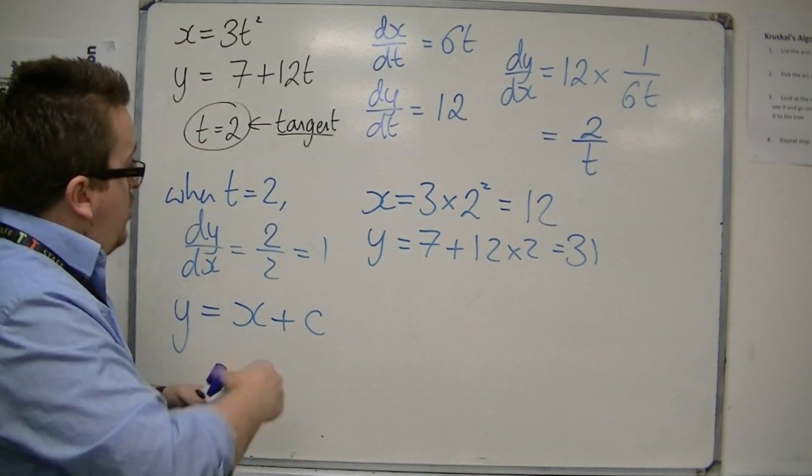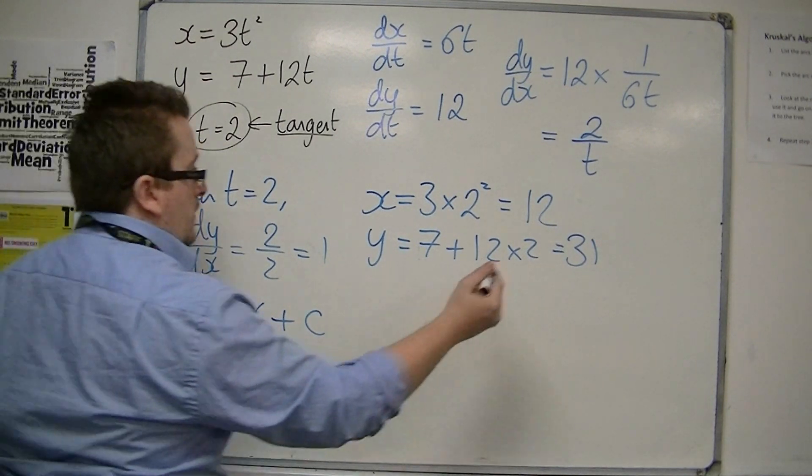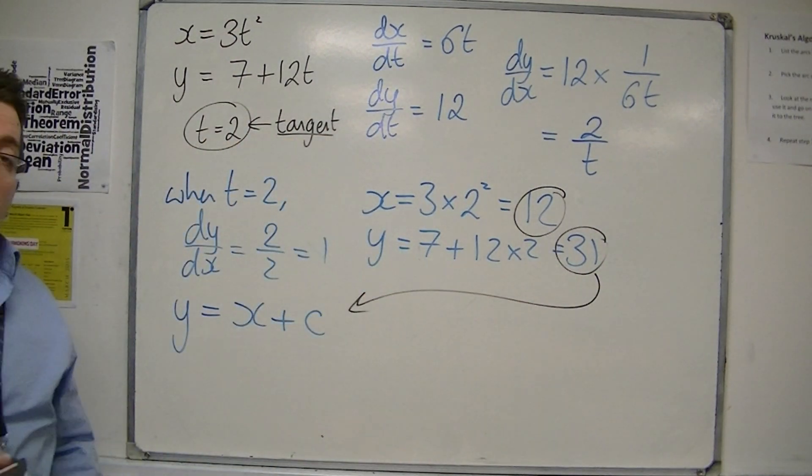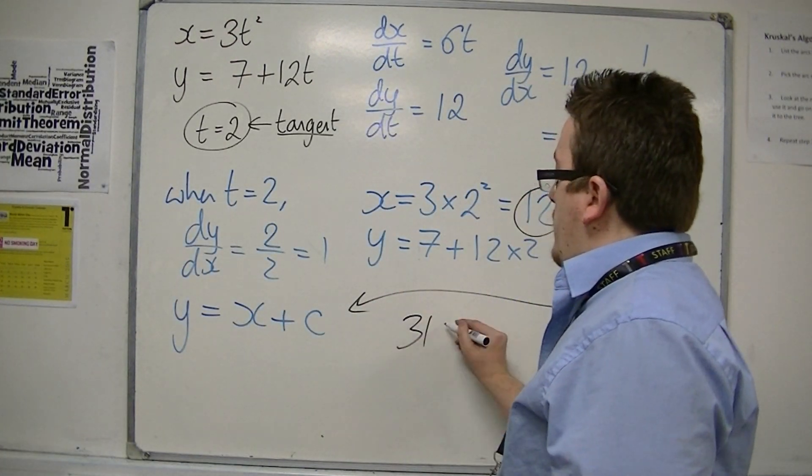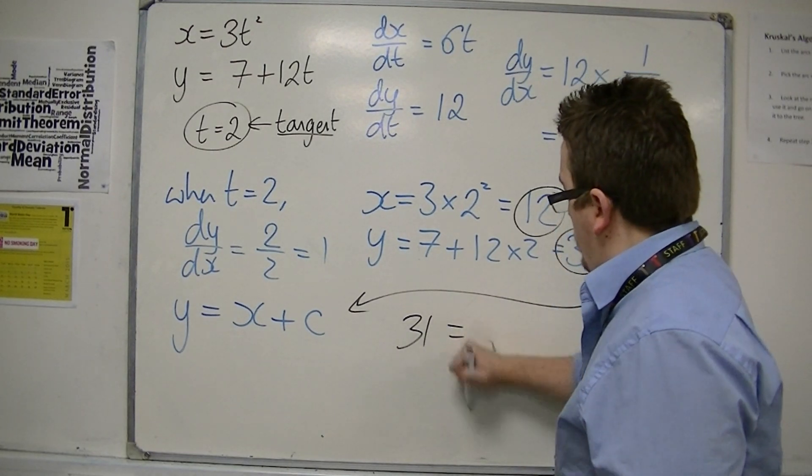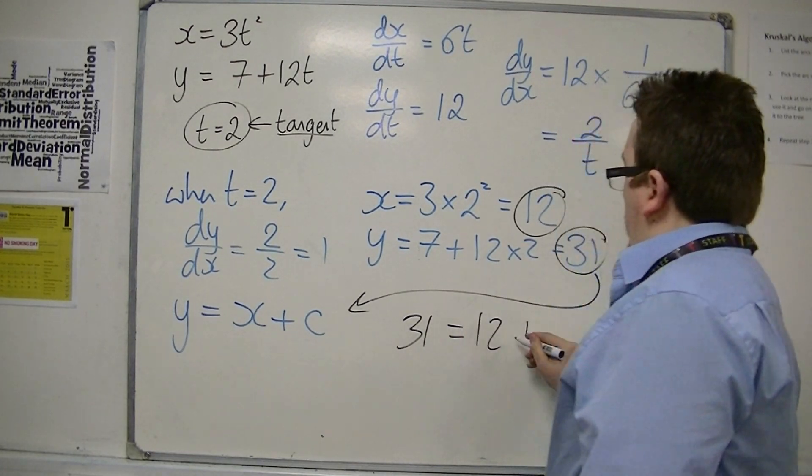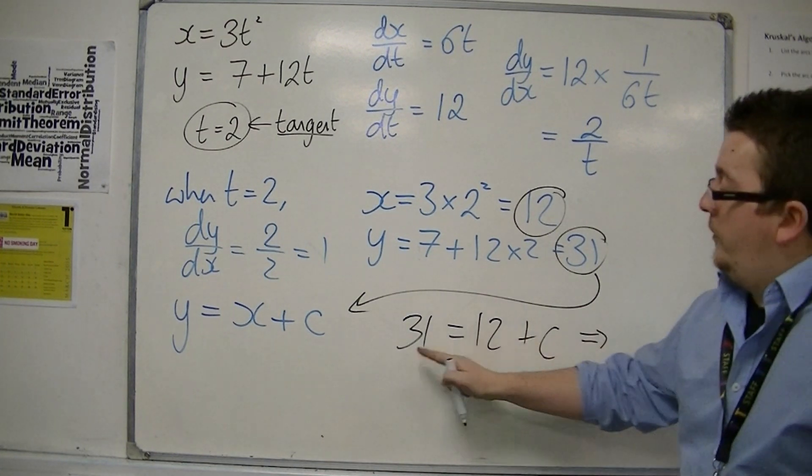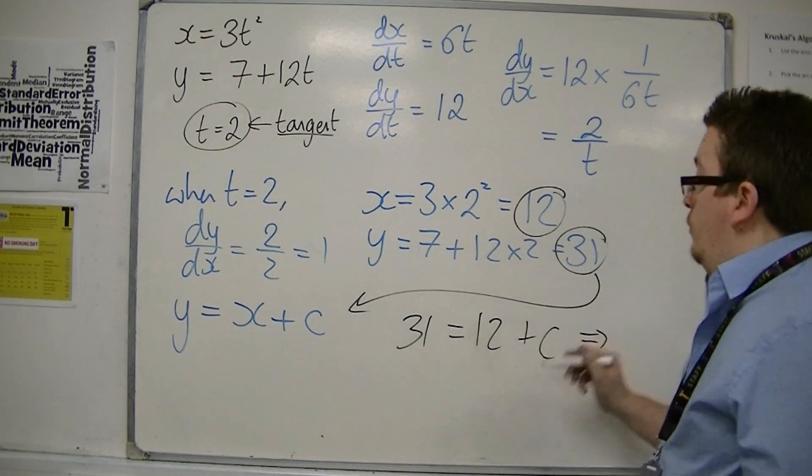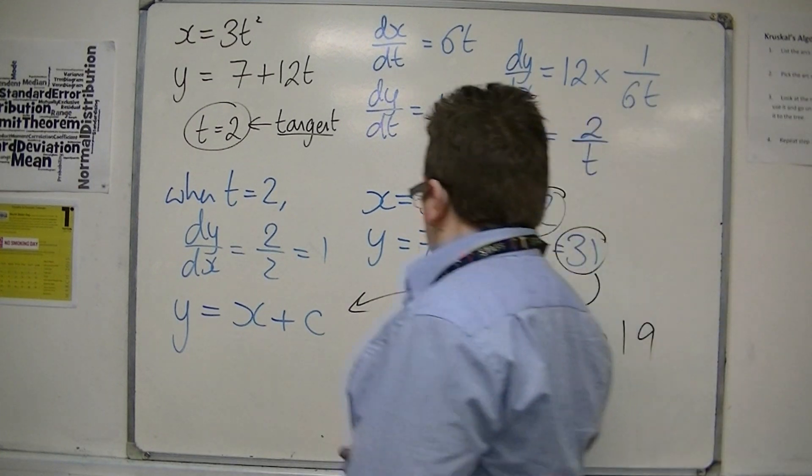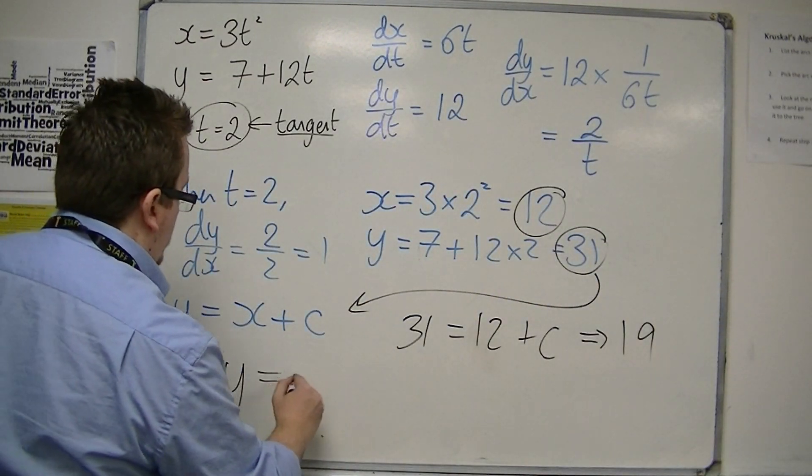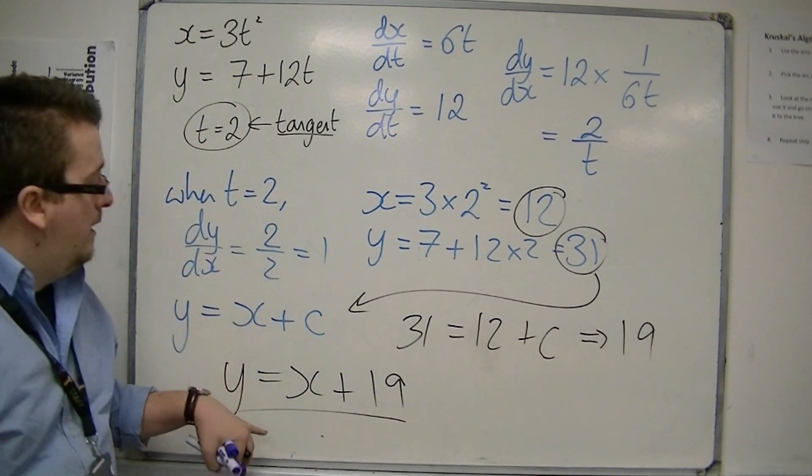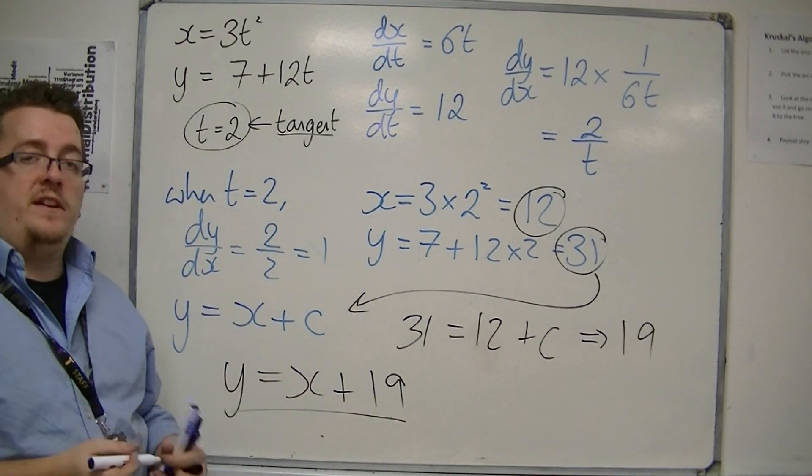So if I substitute them into my equation of a line, that will give me the value of c. So c is 31 take away 12, which is 19. So the equation of the tangent when t is 2 is y is equal to x plus 19.